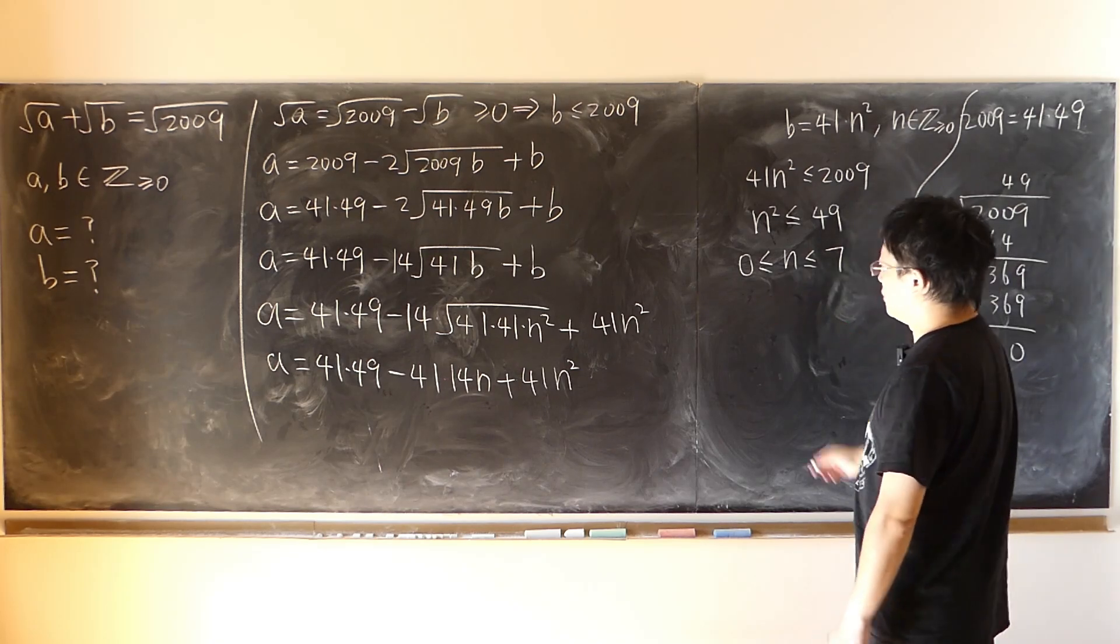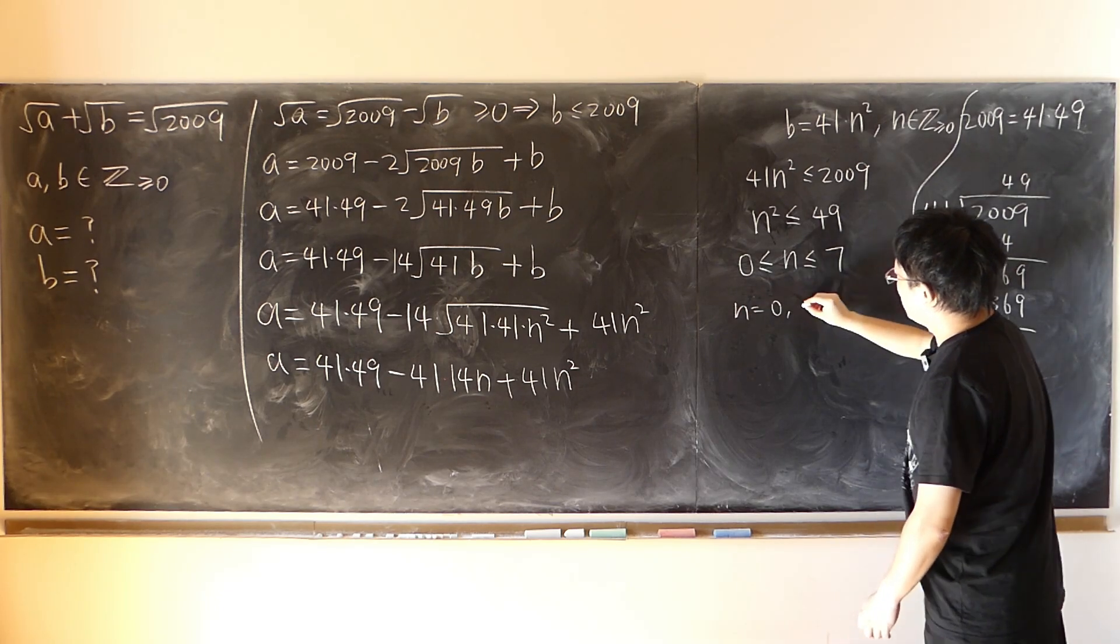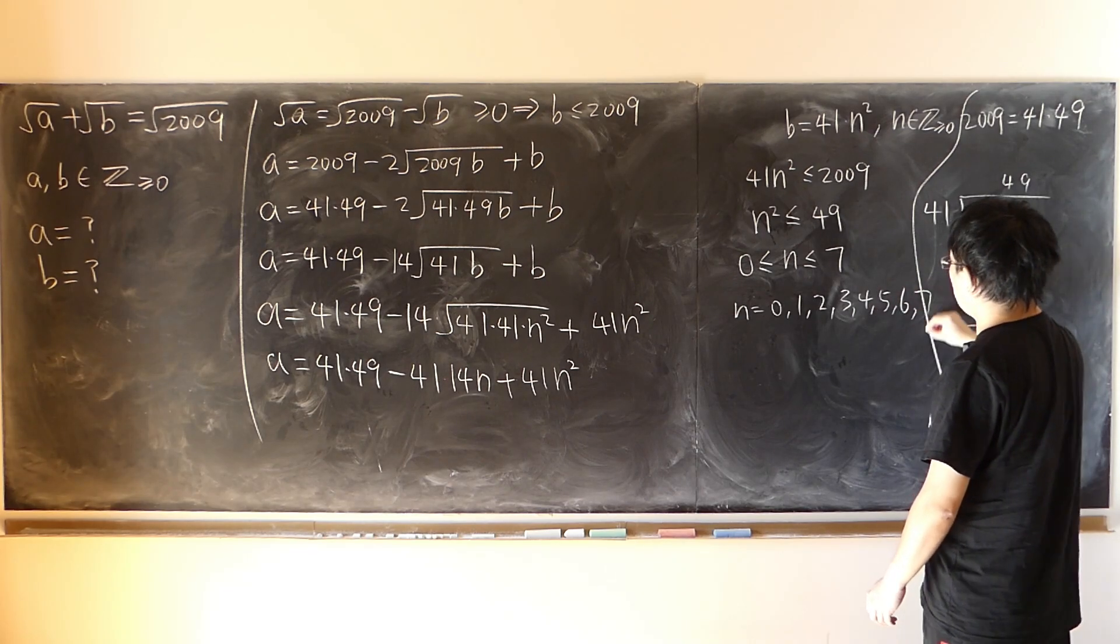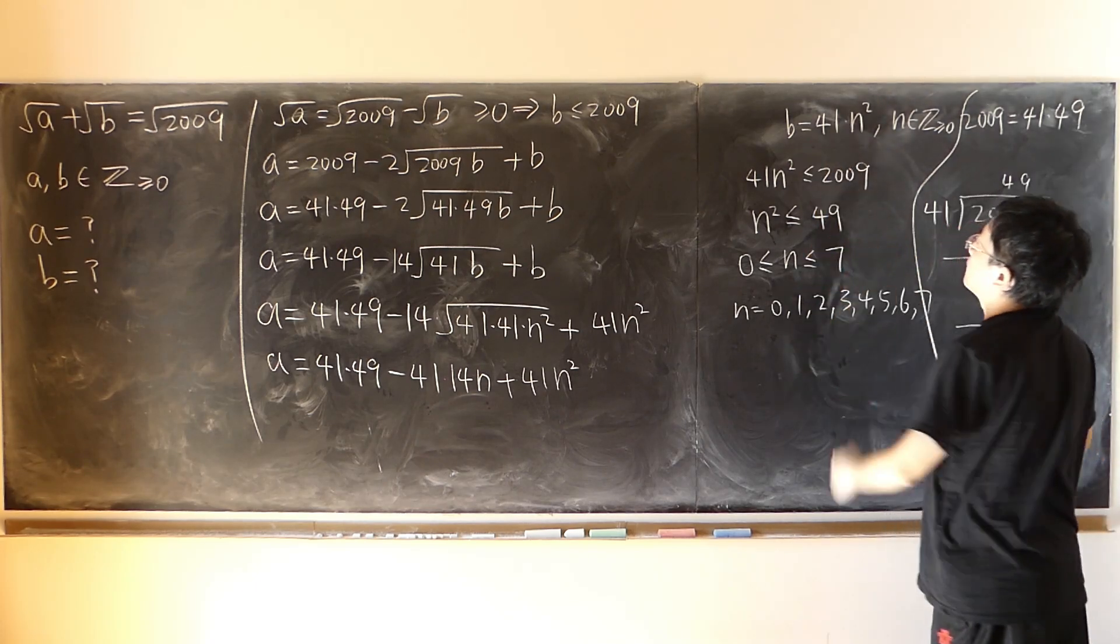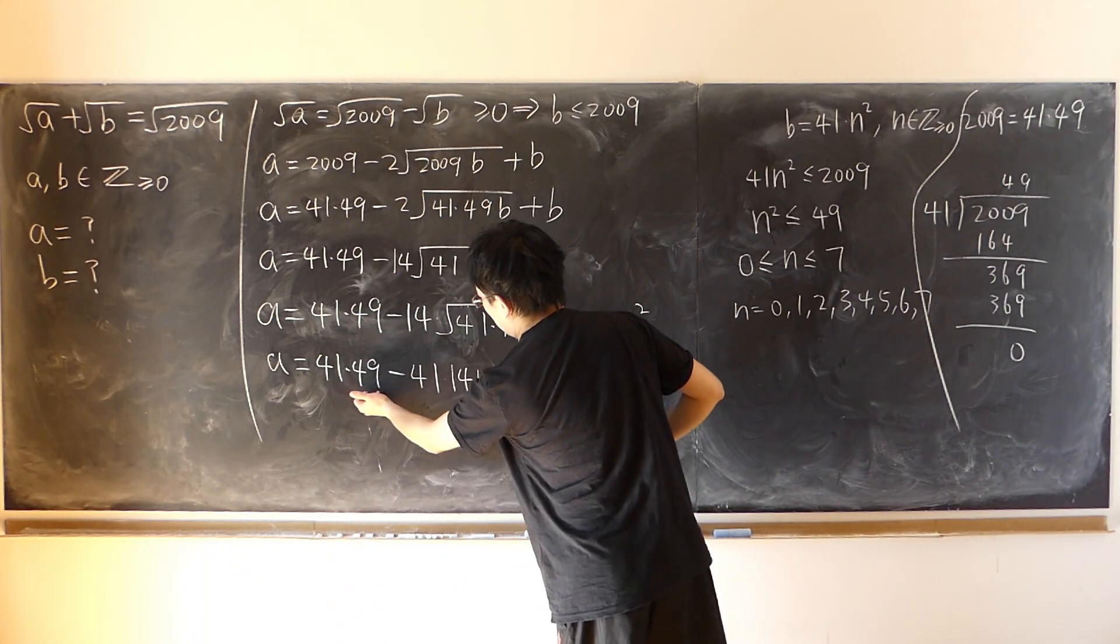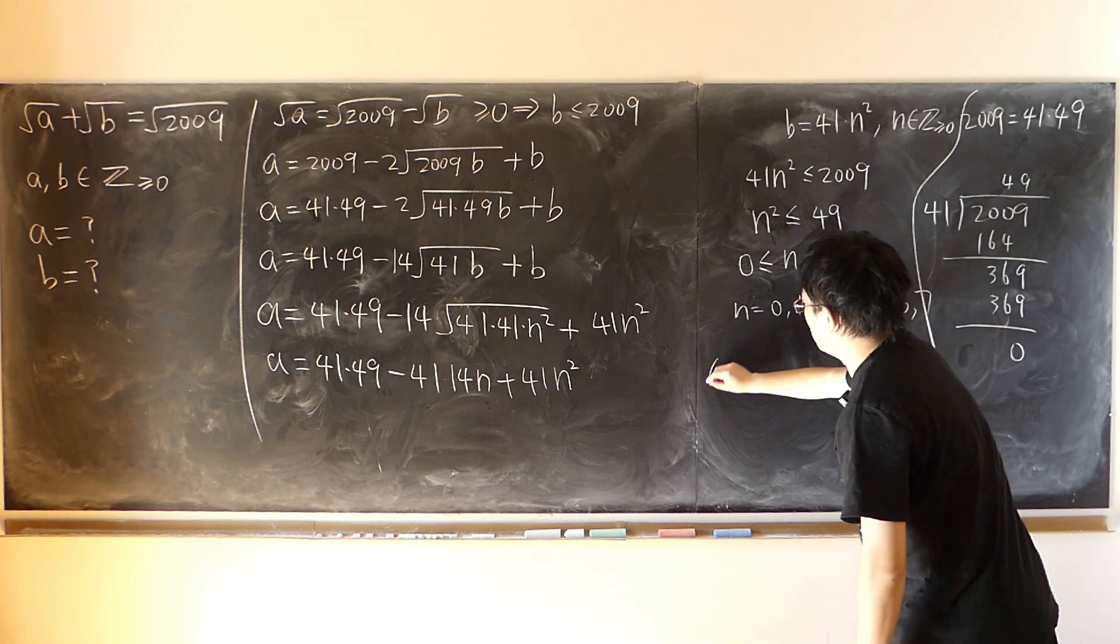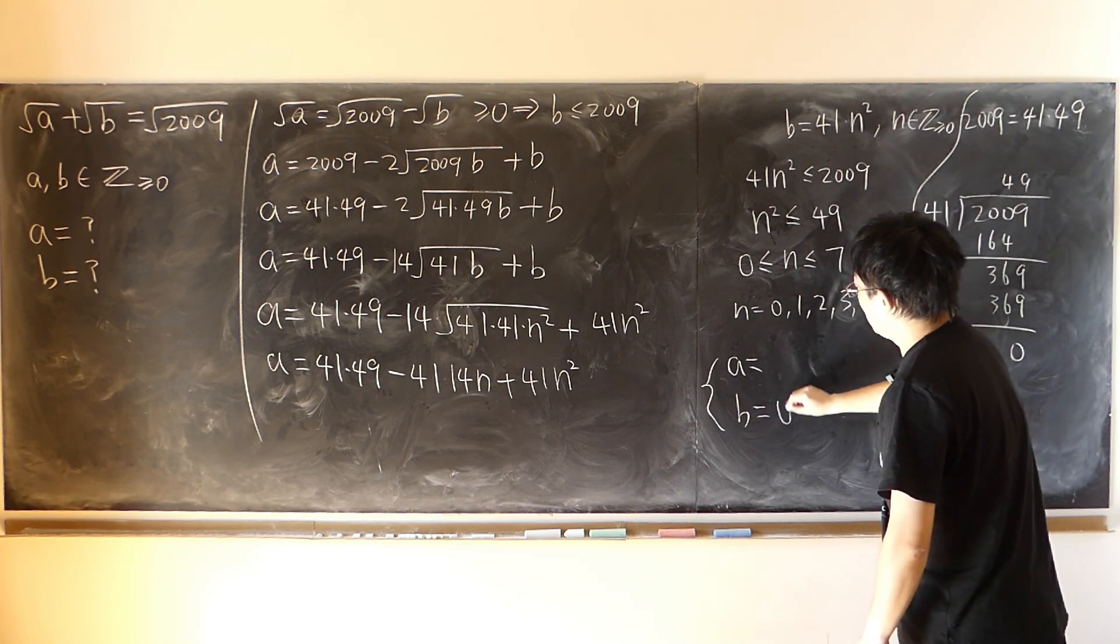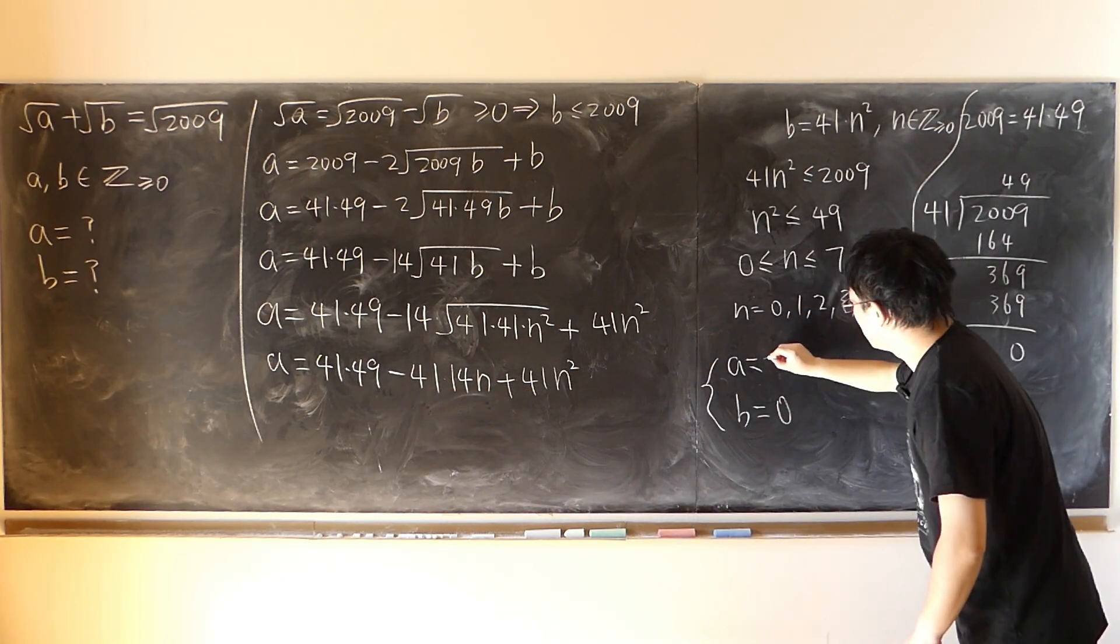So we just substitute n equal 0, 1, 2, 3, 4, 5, 6, 7, one by one into here. We work out b, and subsequently we work out a. First solution, n equal 0, b is equal 0. At the same time, a is equal to 2009.